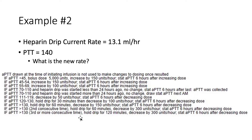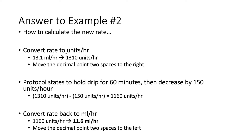To calculate the new rate for example two, we first convert the current rate to units per hour. 13.1 mls per hour converts to 1310 units per hour by moving the decimal point two spaces to the right. The protocol states to hold the drip for 60 minutes, then decrease by 150 units per hour. So 1310 minus 150 equals 1160 units per hour. Converting back to mls per hour by moving the decimal point two spaces to the left gives us 11.6 mls per hour — our new rate.